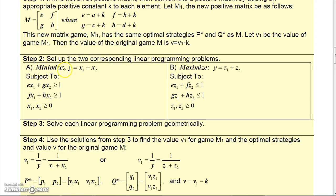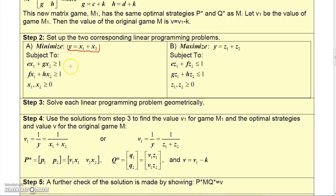One problem, we're going to minimize Y equals X1 plus X2, subject to EX1 plus GX2 is greater than or equal to 1, FX1 plus HX2 is greater than or equal to 1, and X1 and X2 is greater than or equal to 0. E, F, G, and H come from the matrix. Over here, we want to maximize Y equals Z1 plus Z2, subject to EZ1 plus FZ2 is less than or equal to 1, and GZ1 plus HZ2 is less than or equal to 1, and Z1 and Z2 are greater than or equal to 0.